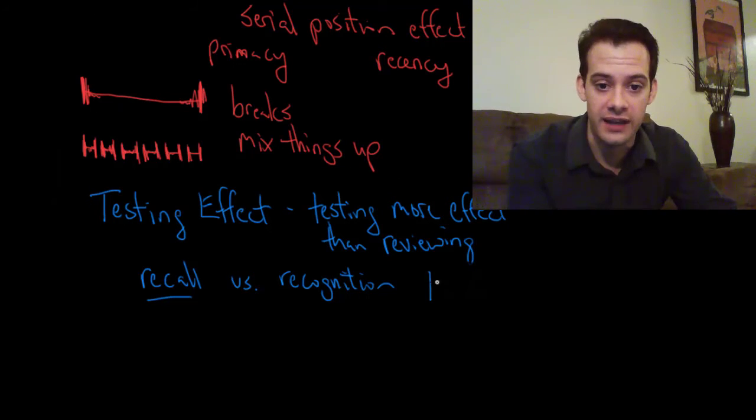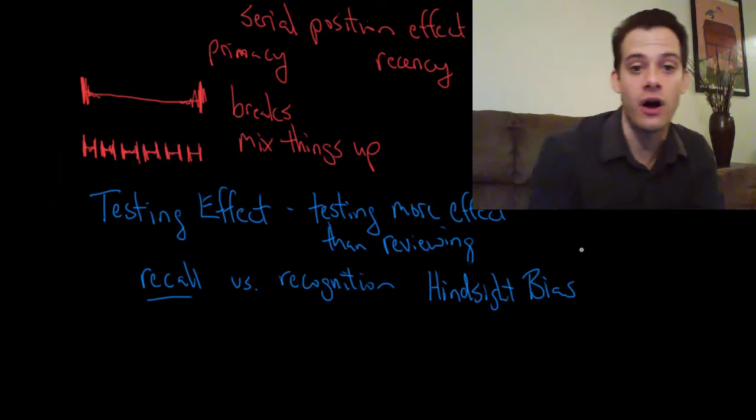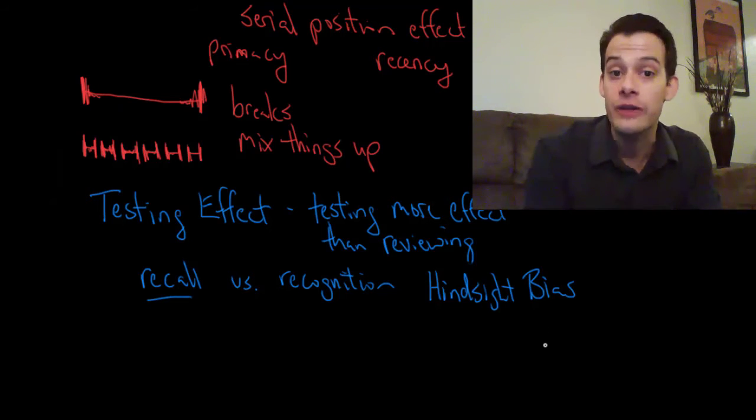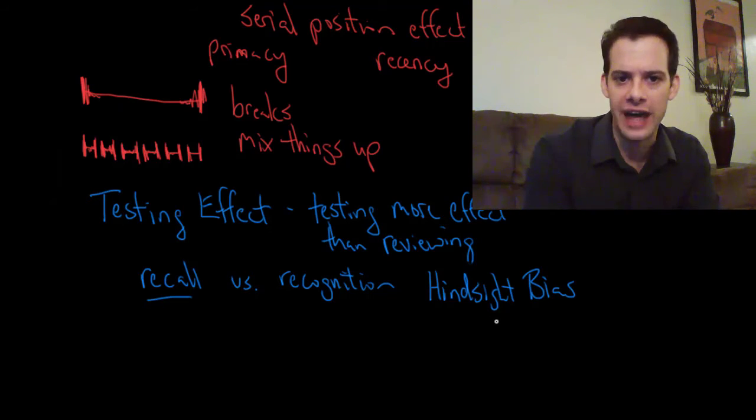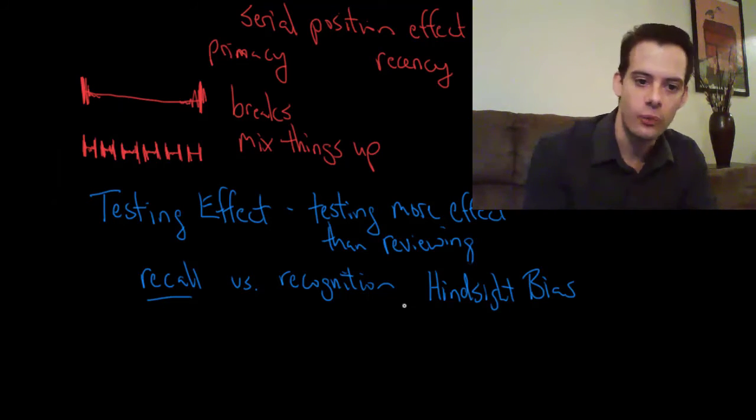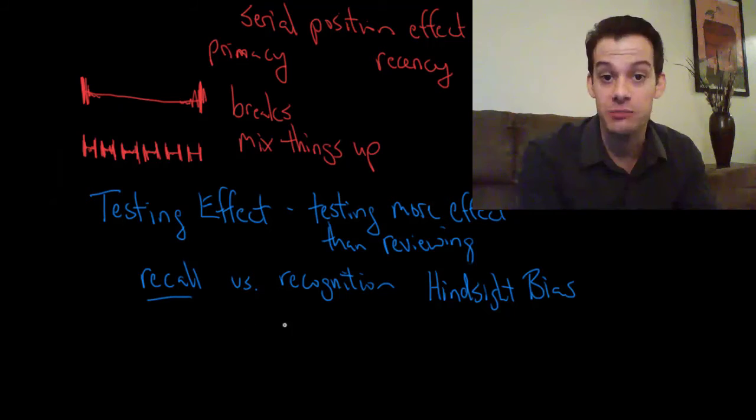Also part of this recognition relates to a bias that I've mentioned in a previous video. This is called hindsight bias. This is the idea that we think we knew something all along, right? Something happens and we say oh yeah I knew that was going to happen. Well that can happen with this sort of recognition where you look at a term in its definition and say oh yeah I knew that. I'm good on that information. When in fact if you were forced to try to recall it you probably didn't know it.